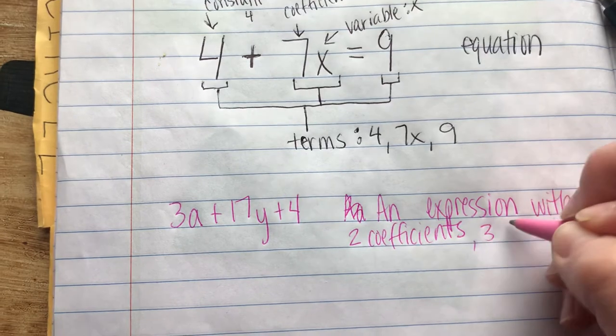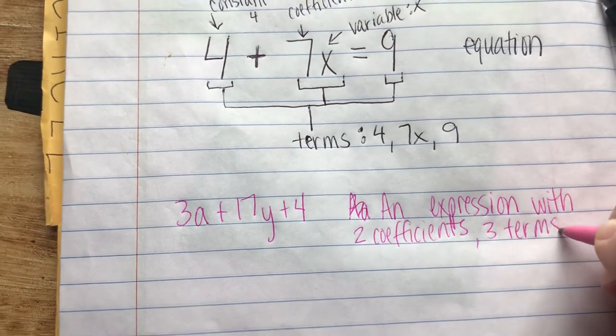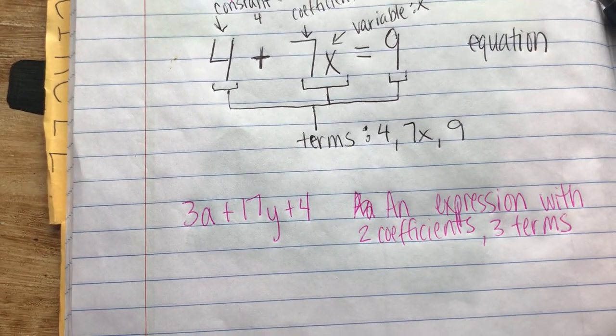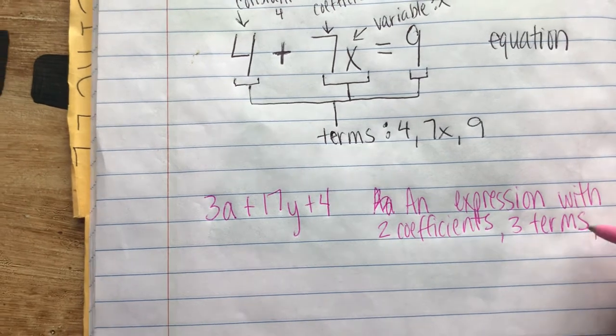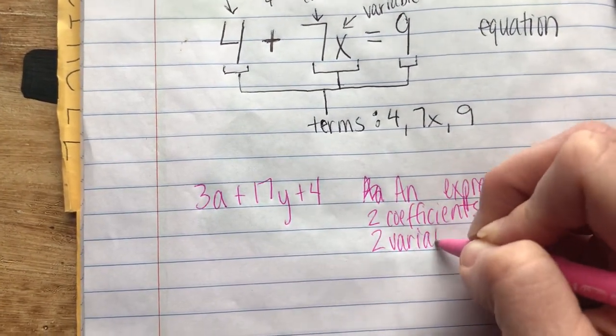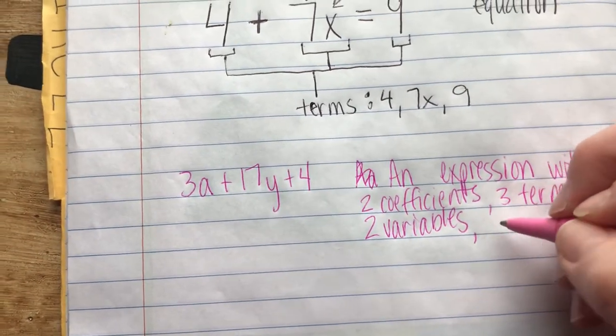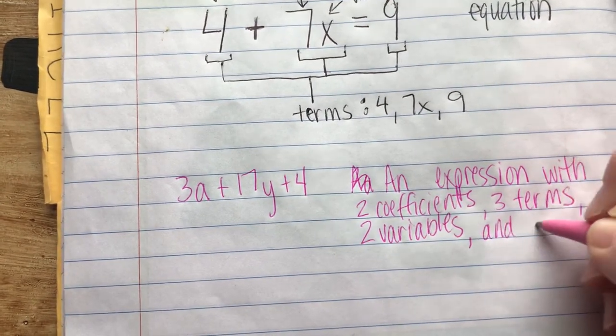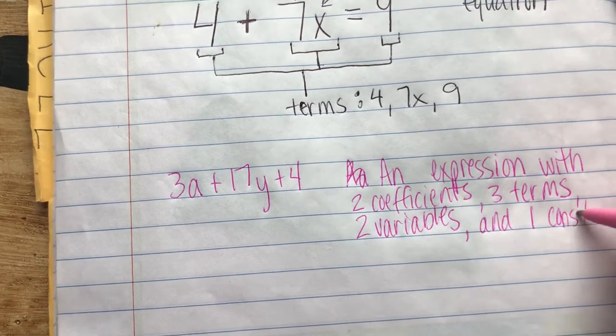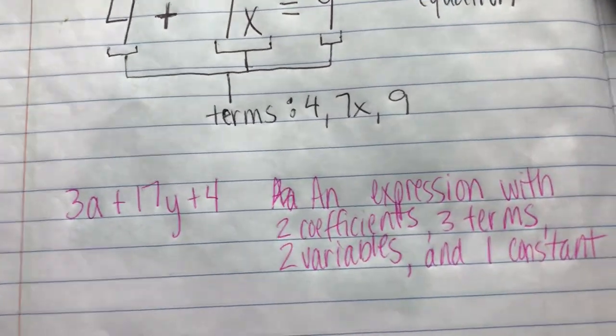three terms—the 3a, the 17y, and the 4—two variables, the a and the y, and one constant, which is the 4.